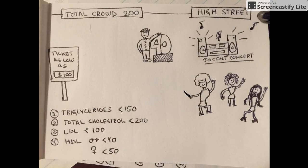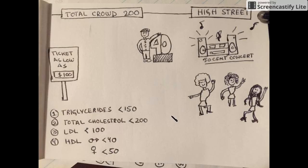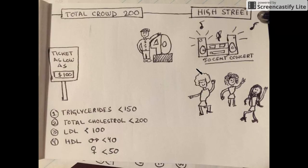HDL values differ between women and men. In women, HDL is about 50 mg/dL — you can see it's a women-only concert and they are dancing to 50 Cent songs, so HDL in women is 50. It's a high street concert, so HDL is 'high.' In men, HDL is 40, represented by the guy standing beside a '40' sign.